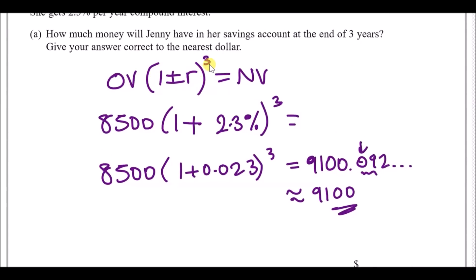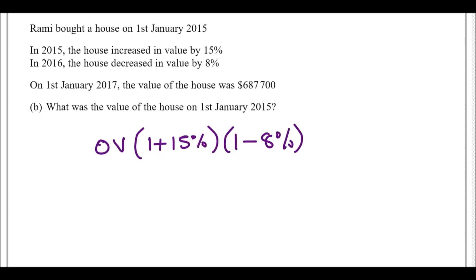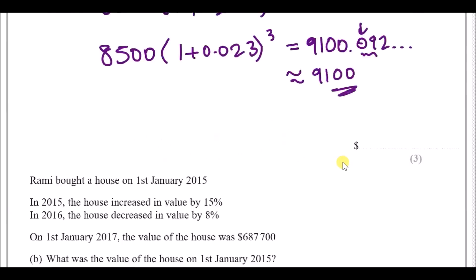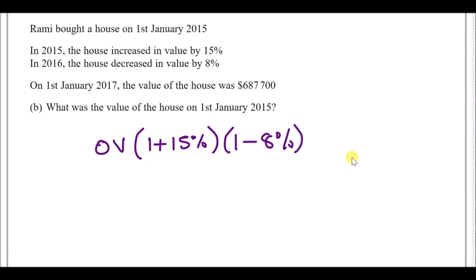You can use the same formula but partition the multiplier for each different rate. Because we have two different rates, the formula becomes: original value times (1 + 15%) times (1 − 8%) equals the new value. This gives us original value times those two brackets equals six hundred and eighty-seven thousand seven hundred dollars.